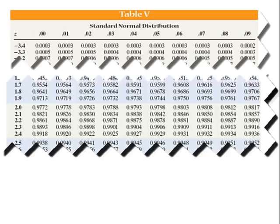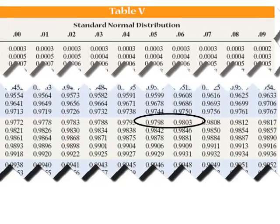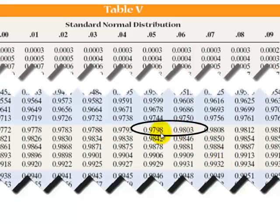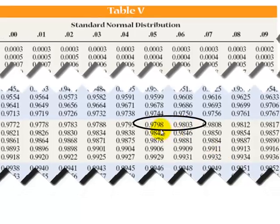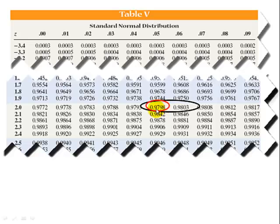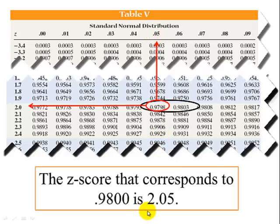So using table 5, looking in the body of the table, we want to find the closest thing to 0.9800. 0.9800 is in between these two values. It's actually closer to this one. That gives us our z-score. So our row component is 2.0, our column component is 0.05. Adding those together, our z is 2.05.